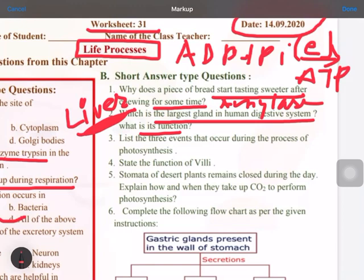List these three events that occur during the process of photosynthesis. So remember these three events you have to write in a proper sequence way: first was absorption of sunlight with the help of chlorophyll pigment, second breaking down or you can write the photolysis of water, and third is the reduction process, the combination of hydrogen with the carbon dioxide to give you glucose. Fourth question: state the function of villi.